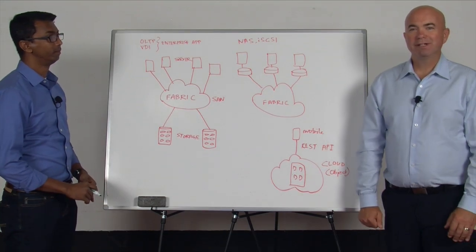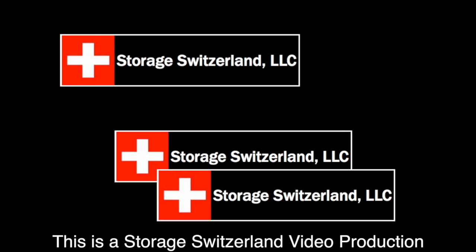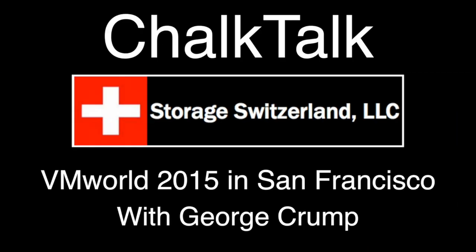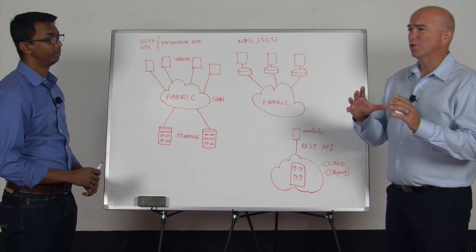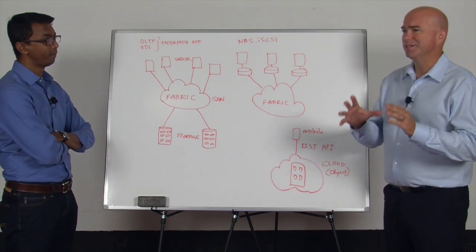Hi, I'm George Crump, Lead Analyst with Storage Switzerland. We're at VMworld 2015, and one of the big subjects here is infrastructure. We have a data center that's under the process of evolution. We've got core technology like fiber channel, legacy applications that need that infrastructure, but we're also evolving to a more IP storage-based reality.